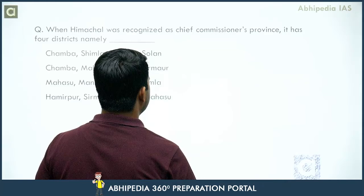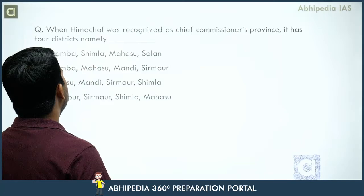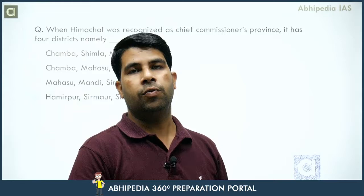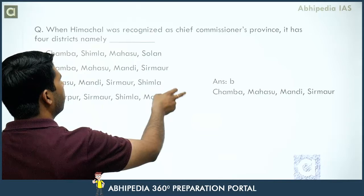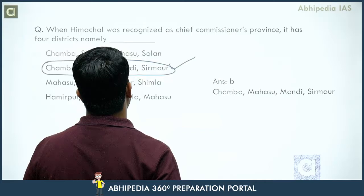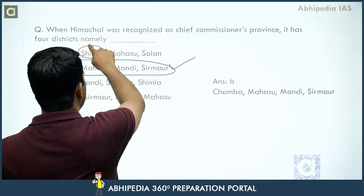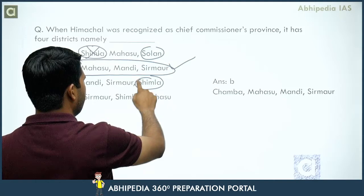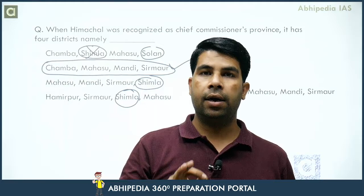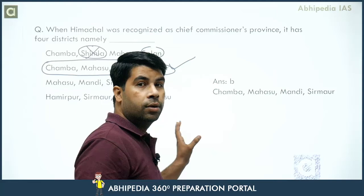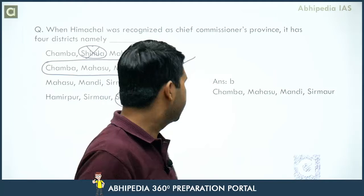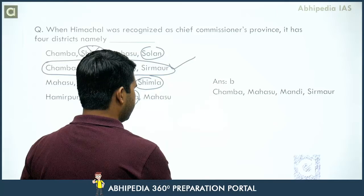Next question: when Himachal was recognized as a Chief Commissioner Province, it had four districts. The answer is B — Chamba, Mahasu, Mandi, and Sirmaur.